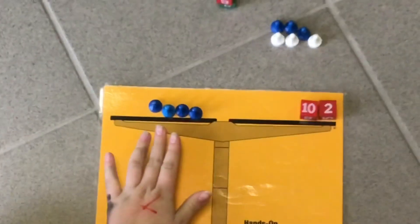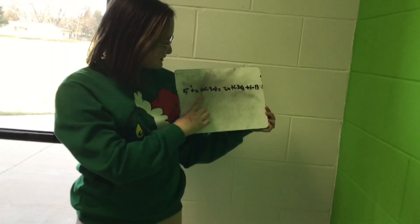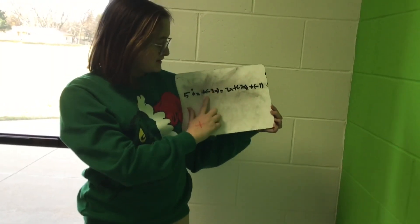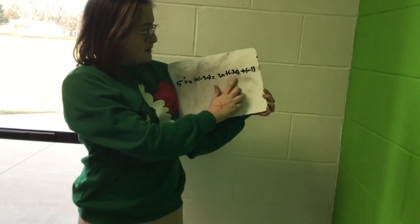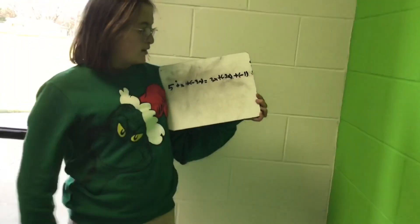This is the problem: x equals 5 plus x, plus the opposite of 3x, equals 3x plus the opposite of 2x plus negative 1.